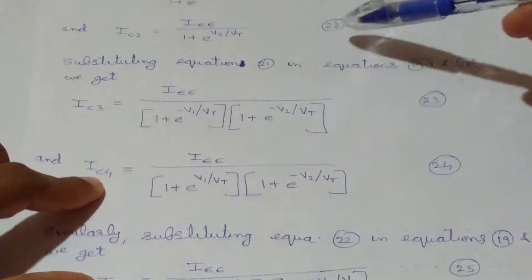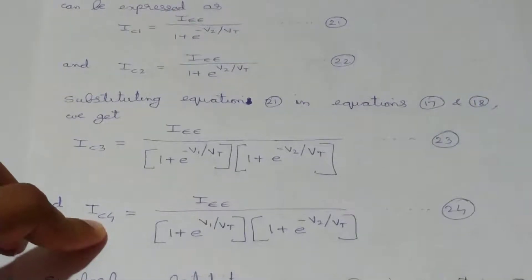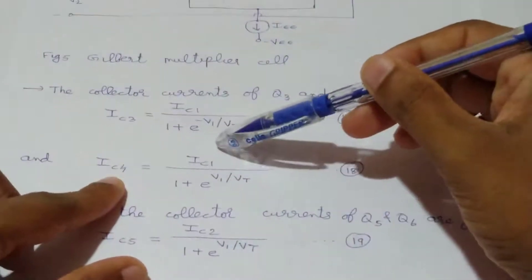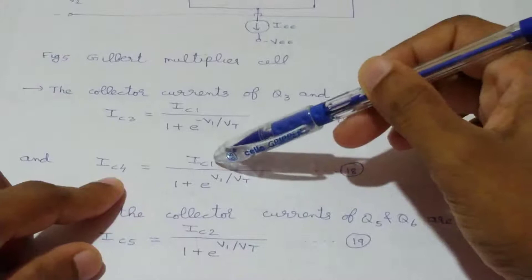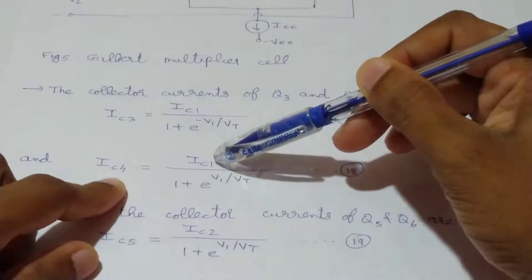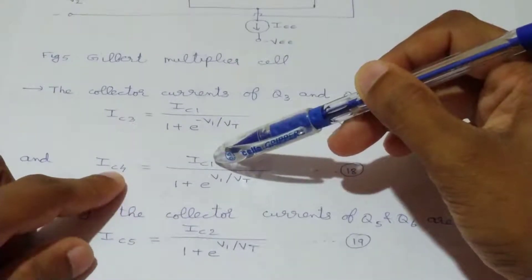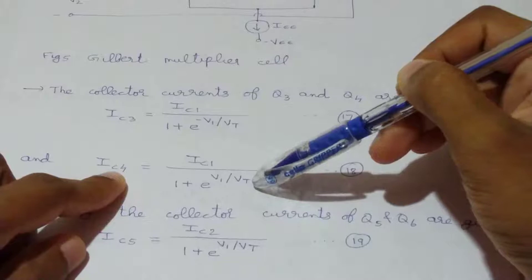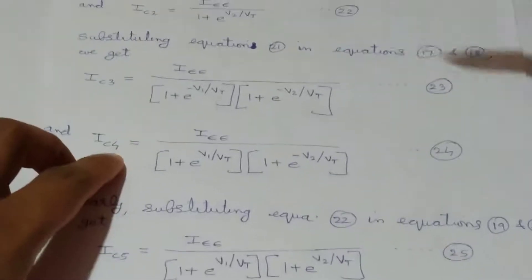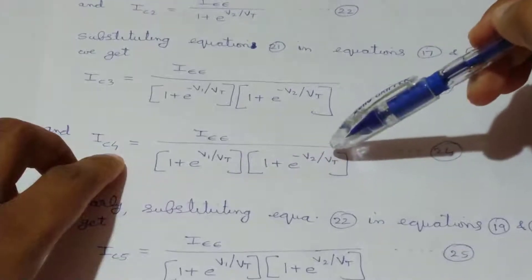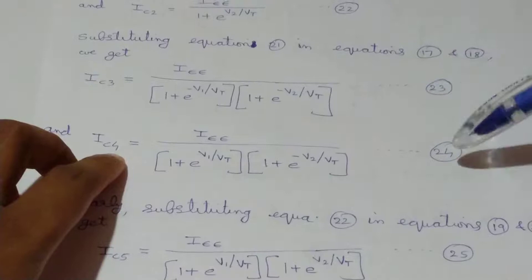Similarly, substituting equation 21 into equation 18, for IC1 we substitute IEE divided by (1 + e raised to minus V2 over Vt). Hence IC4 equals IEE divided by (1 + e raised to V1 over Vt) times (1 + e raised to minus V2 over Vt). These are equations 23 and 24.